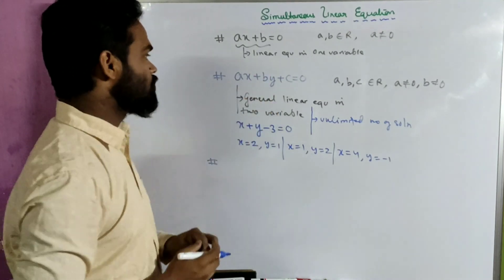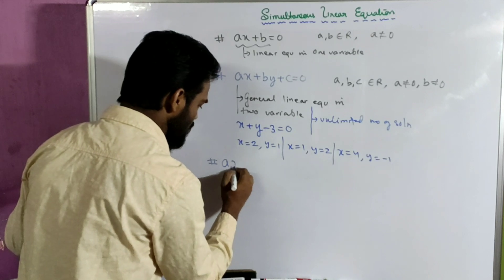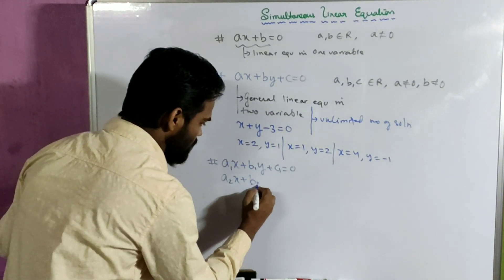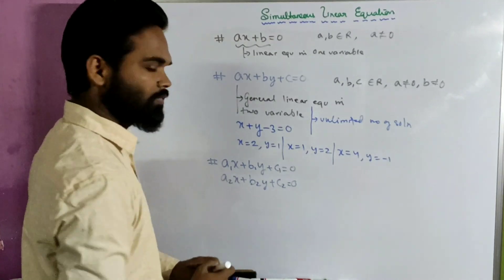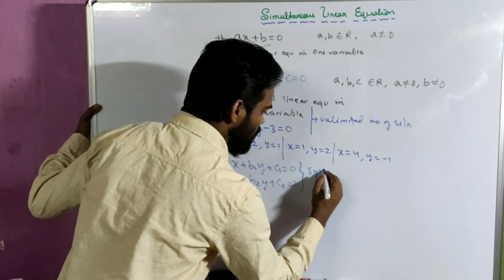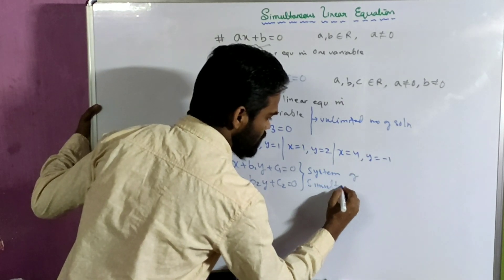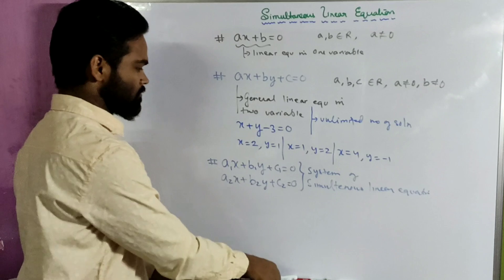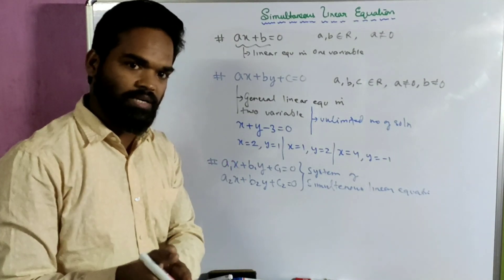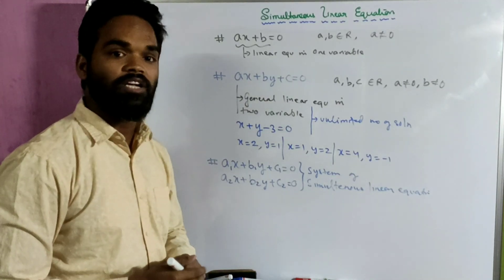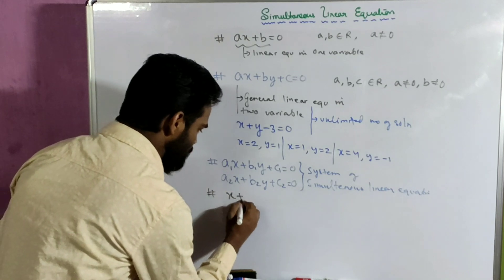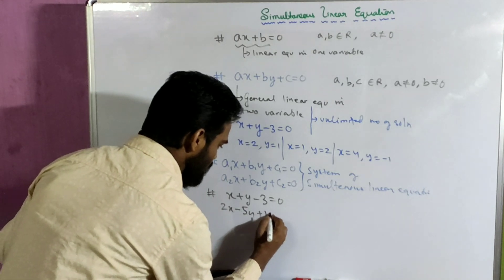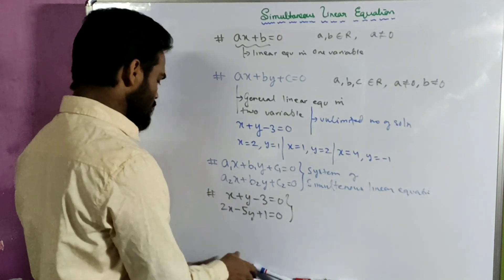Now consider two general linear equations in two variables. Suppose a1x plus b1y plus c1 equals to 0, and a2x plus b2y plus c2 equals to 0. This system is known as simultaneous linear equations. Two unknown variables are given and two equations are given — they form your simultaneous linear equation. For example: x plus y minus 3 equals to 0, and 2x minus 5y plus 1 equals to 0 — this is your simultaneous linear equation.